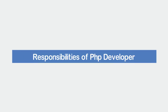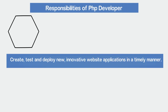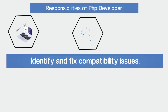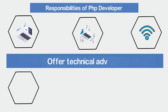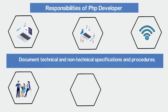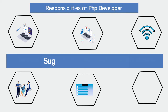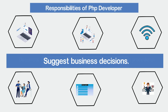Let's have a look at the responsibilities of the PHP developer. Create, test and deploy new innovative website applications in a timely and effective manner. Identify and fix compatibility issues involving CSS, HTML and scripting. Test websites on all sorts of browsers and address issues identified by customer feedback. Offer technical advice and expertise to product managers and other employees. Document technical and non-technical specifications and procedures. Maintain and manage complete documentation and suggest business decisions from a technical perspective such as performance, scalability, and security.